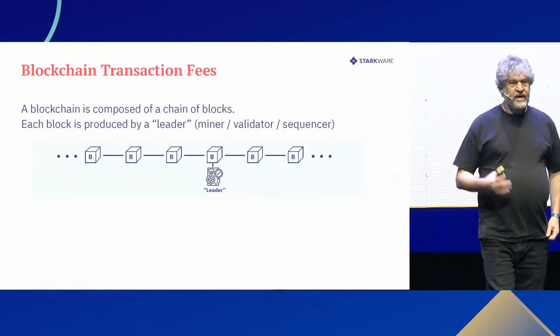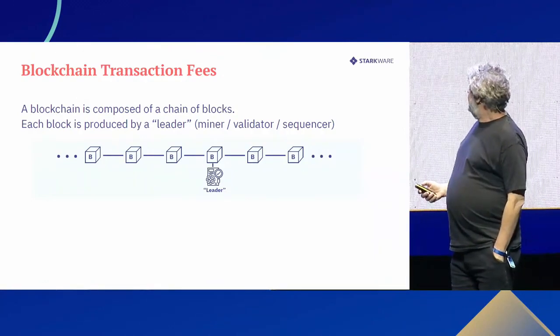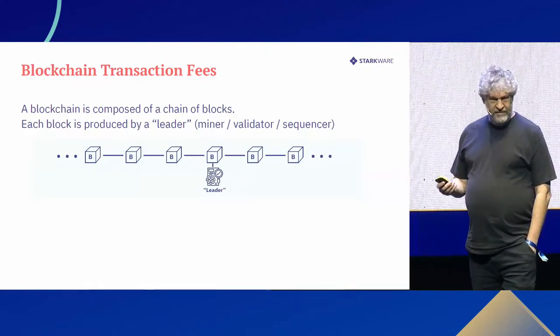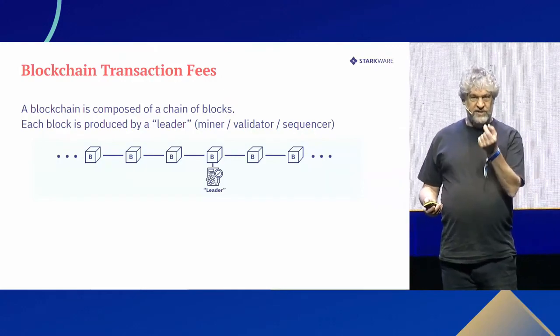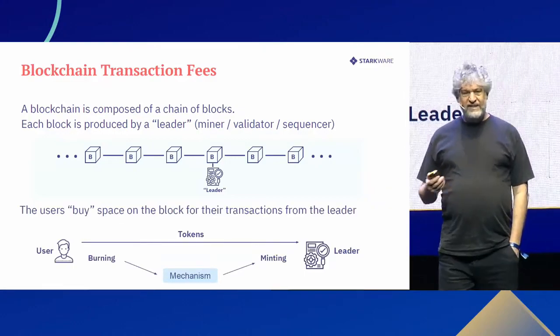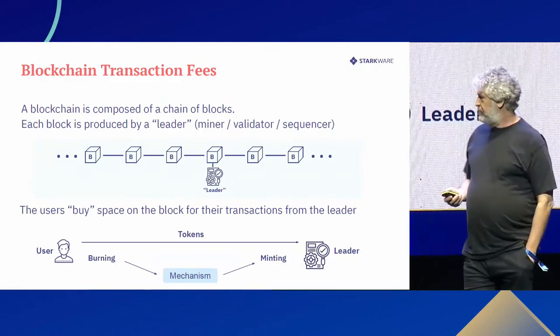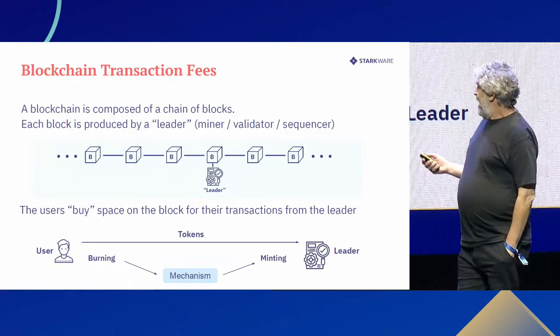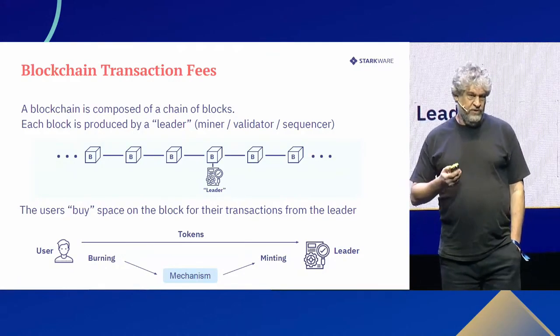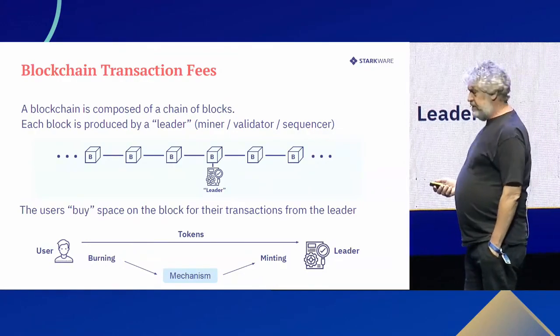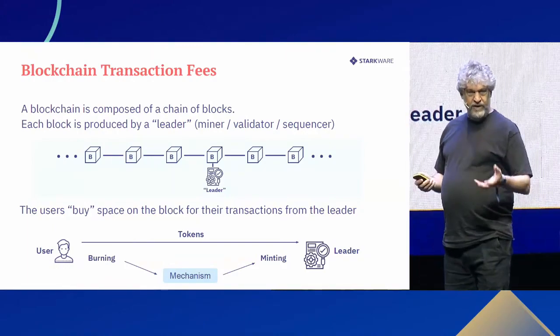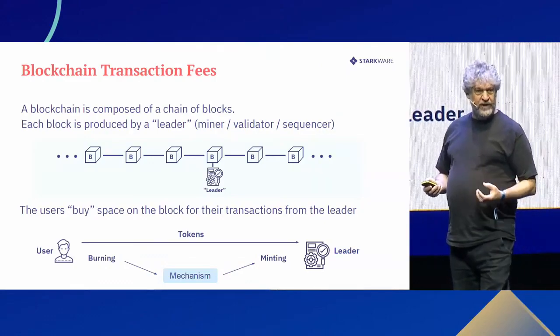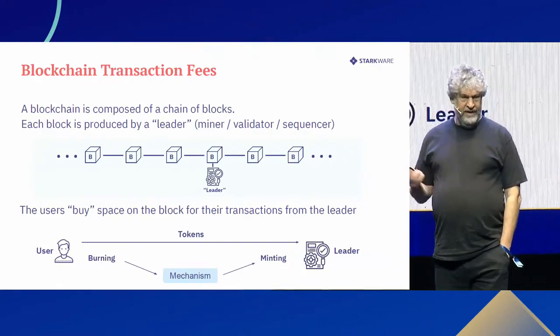Let me define the two key terms: transaction fees and mechanism design. A blockchain has a bunch of blocks, each block gets a leader — sometimes called a miner, validator, or sequencer. The point is one entity gets to build the block, and users buy space on that block for their transactions. Uniquely in blockchains, users can pay tokens to the leader, tokens can be burned, or the mechanism can mint new tokens and give them to the leader.